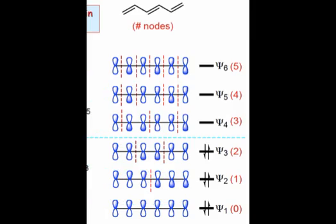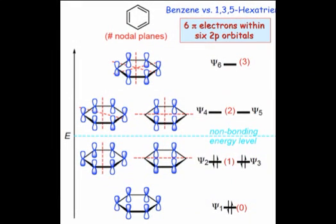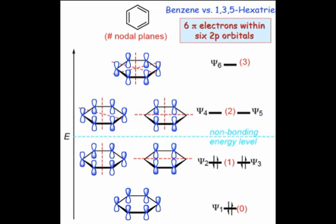In benzene, we see patterns of orbital energies and phases that differ radically from those of hexatriene. In the lowest level, all lobes possess the same phase. However, their cyclic arrangement leads to six bonding interactions now, instead of five.